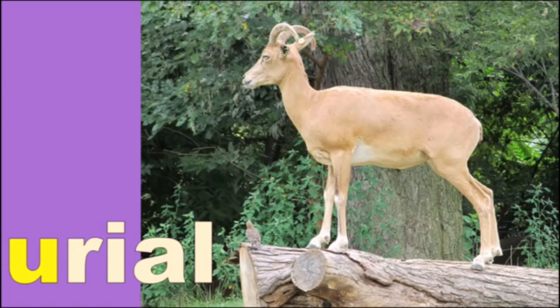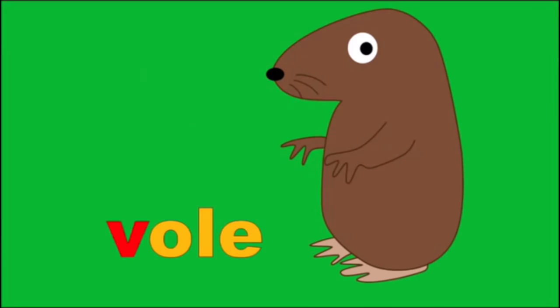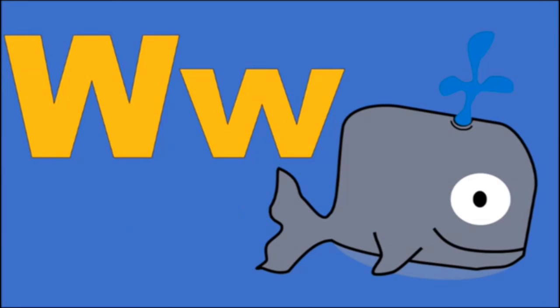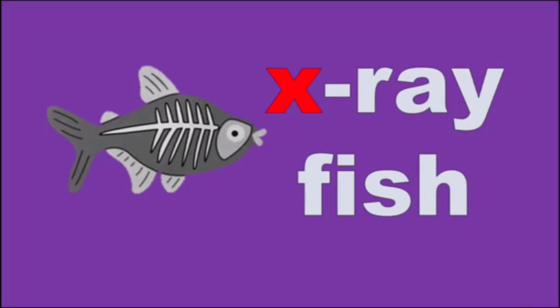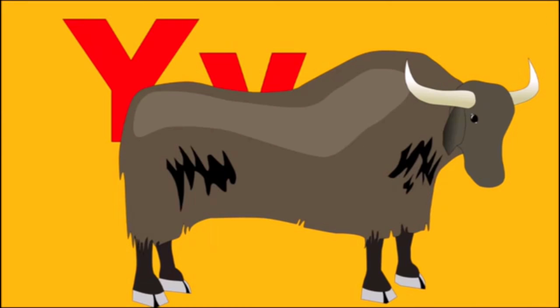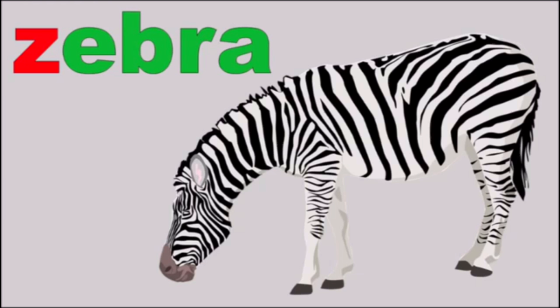U is for Urial, u. V is for Vole, v. W is for Whale, w. X is for X-ray Fish, k. Y is for Yak, y. Z is for Zebra, z.